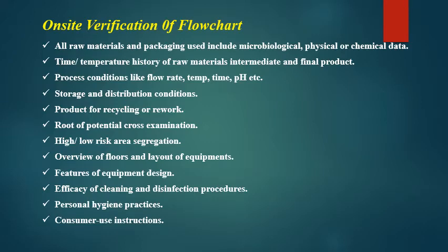On-site verification of the flowchart is important. We must define the products in detail and develop a flowchart. Verifications to be done include: all raw materials and packaging used, including microbiological, physical, or chemical data; time-temperature history of raw materials, intermediate, and final product; process conditions like flow rate, temperature, time, and pH; storage and distribution conditions; products for recycling or rework; routes of potential cross-contamination; high or low risk area segregation; overview of floors and equipment layout; features of equipment design; efficacy of cleaning and disinfection procedures; personal hygiene practices; and consumer use instructions.